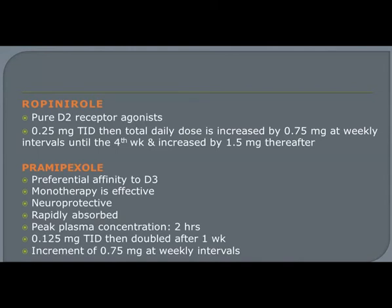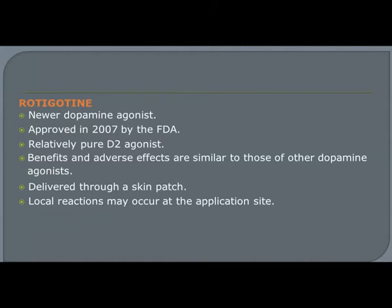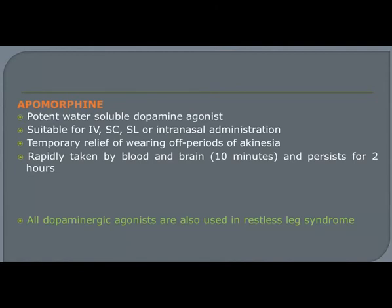Non-ergot alkaloid dopamine agonists include ropinirole, pramipexole, and rotigotine. These drugs show activity by binding to D2 and D3 receptors and improve muscular fluctuation. Rotigotine is a newer drug that can also be delivered through a skin patch. Apomorphine is another dopaminergic agonist available in IV, subcutaneous, sublingual, or intranasal preparations; it is a potent water-soluble dopamine agonist helpful to treat wearing-off effects. All dopaminergic agonists are also useful to treat restless legs syndrome.